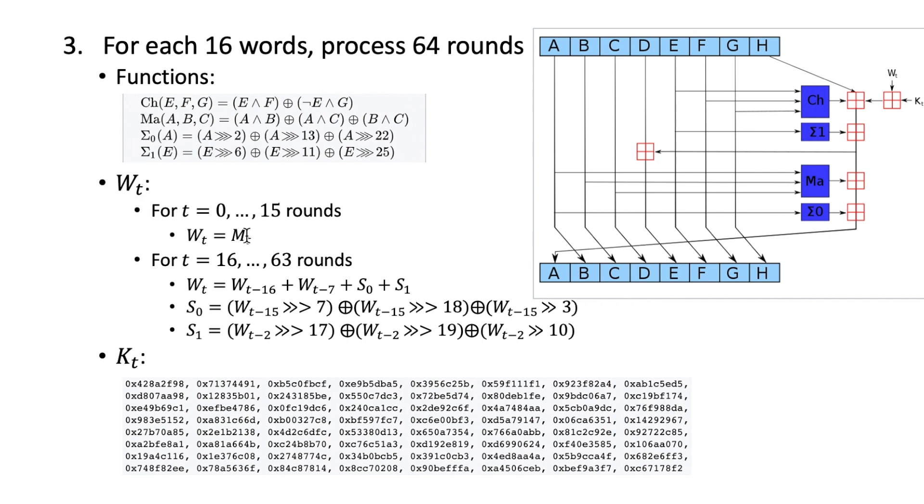And for the parameter Kt here, these are the values we put in Kt for all the 64 rounds, and we put each one in each round.